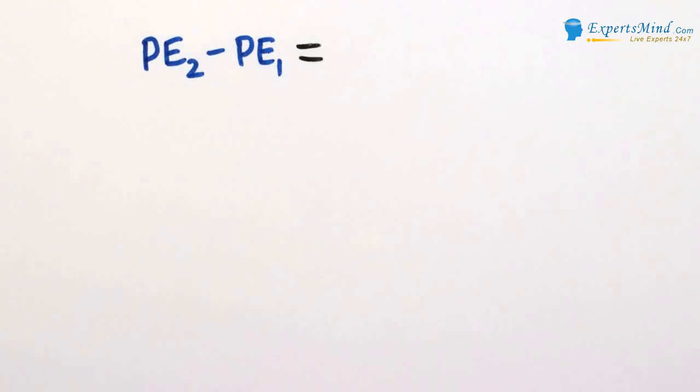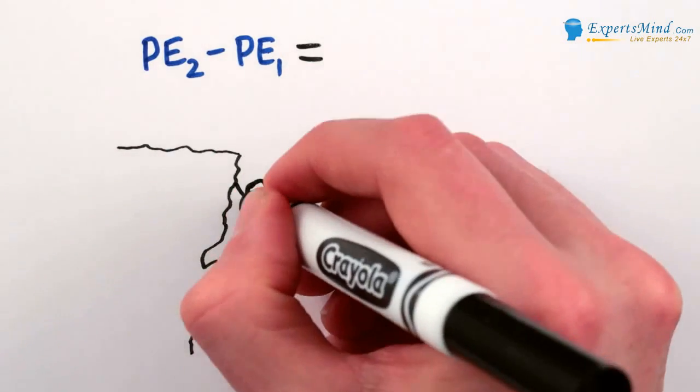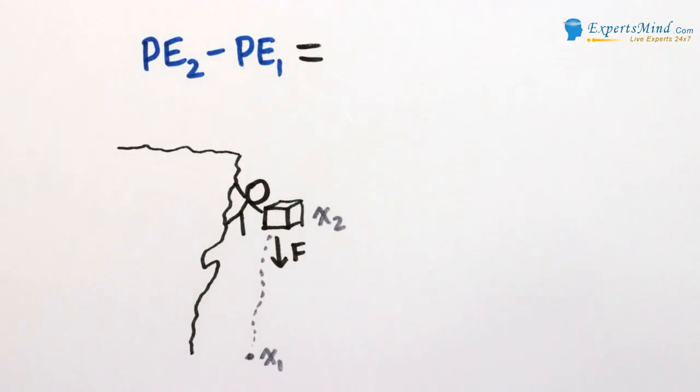On the other hand, the change in the potential energy of an object is negative the amount of work it takes to get the object to its current position from its previous position independent of the path taken. That is, potential energy is the negative of the force applied times the change in position.